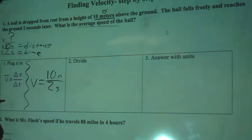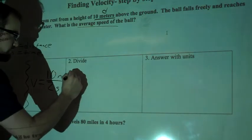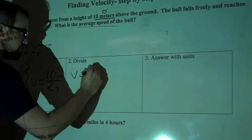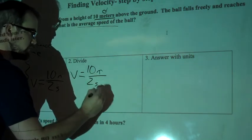Step 2, we're going to divide these. I'm going to set this up again. V equals 10 meters divided by 2 seconds.